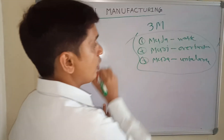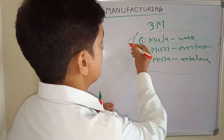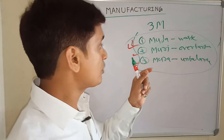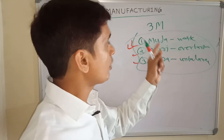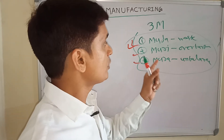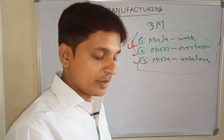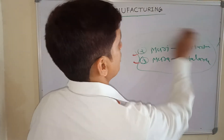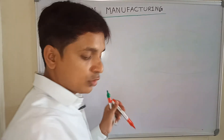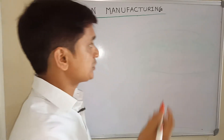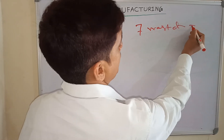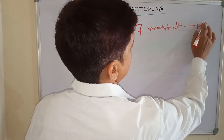If you want to implement lean manufacturing, you have to implement all of the 3M — you have to remove all three wastes from your organization. Now we will discuss about the seven wastages of the Toyota Production System.